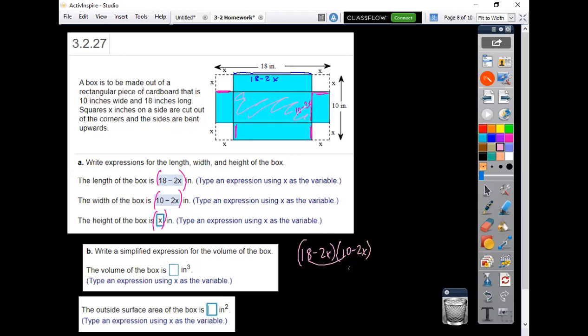There's a negative 20 and a negative 36, and then negative 2x times negative 2x would be a positive 4x squared. Combining these in the middle, I've got a negative 56x plus my 4x squared. But that's just the area of the base.